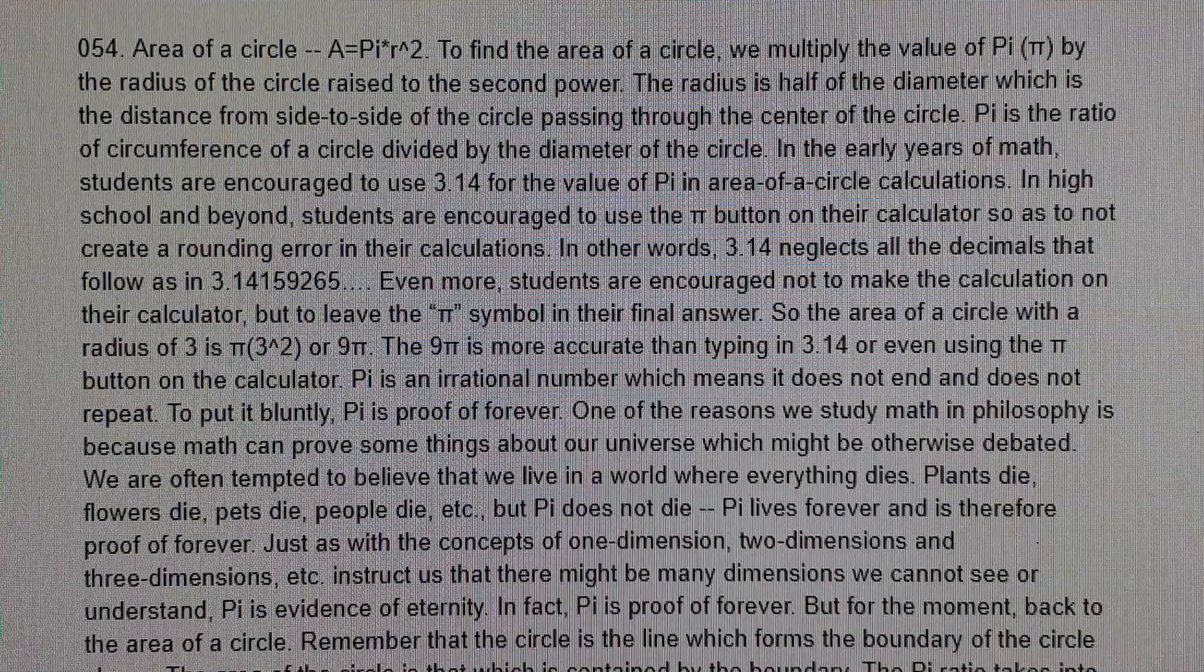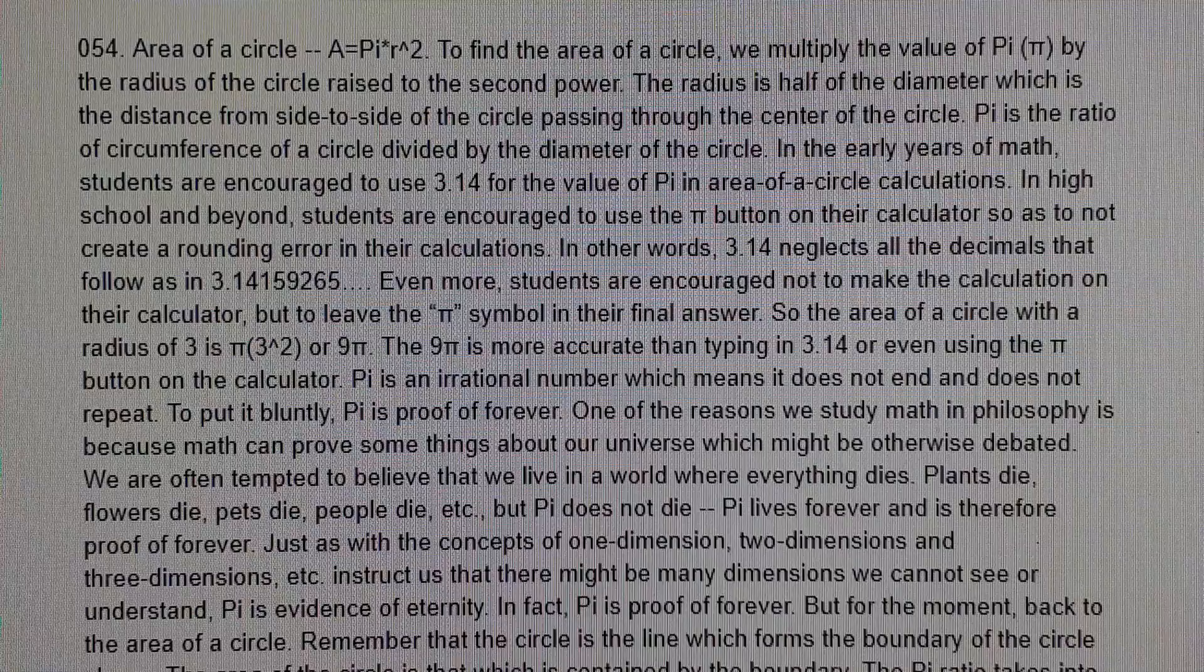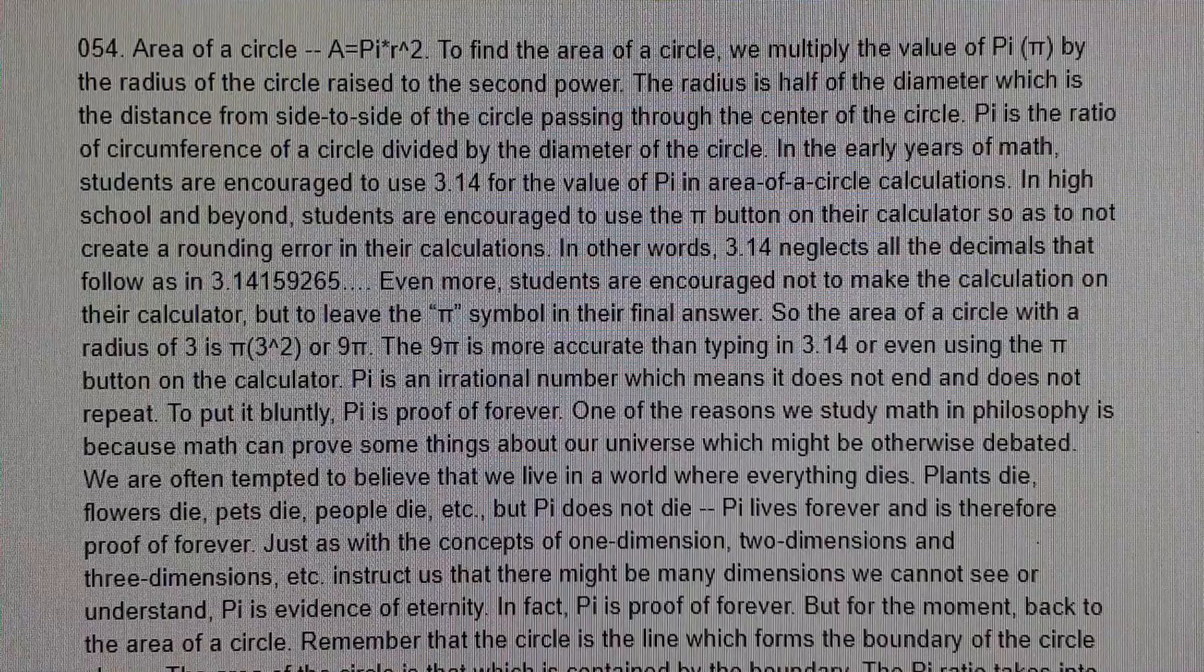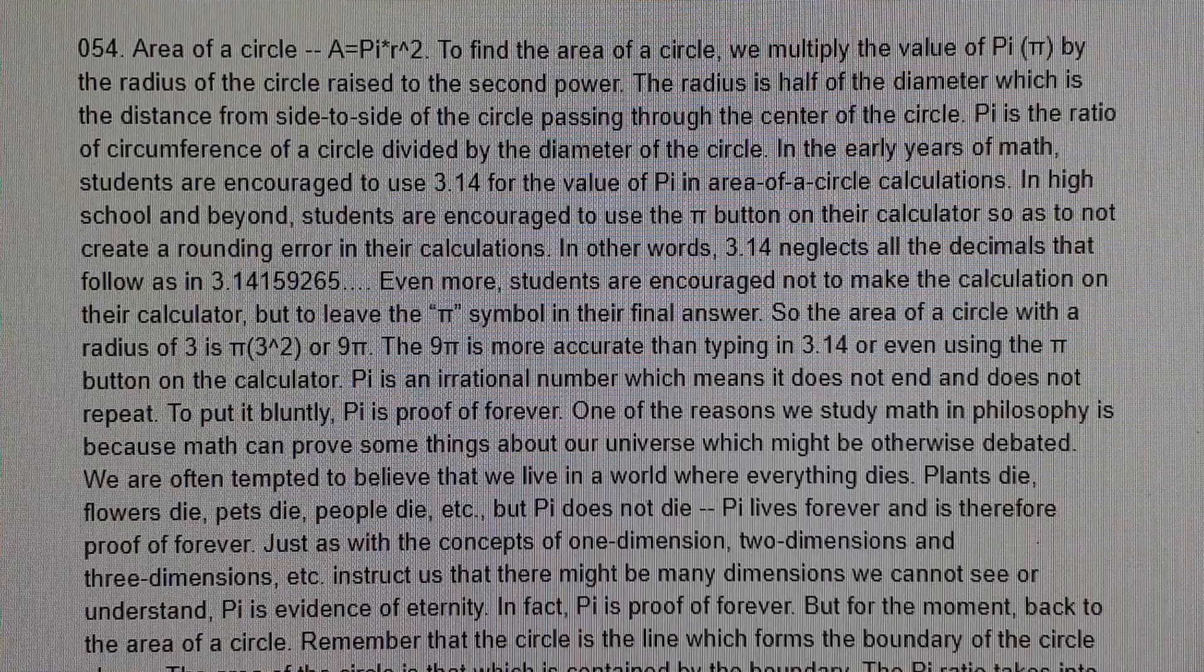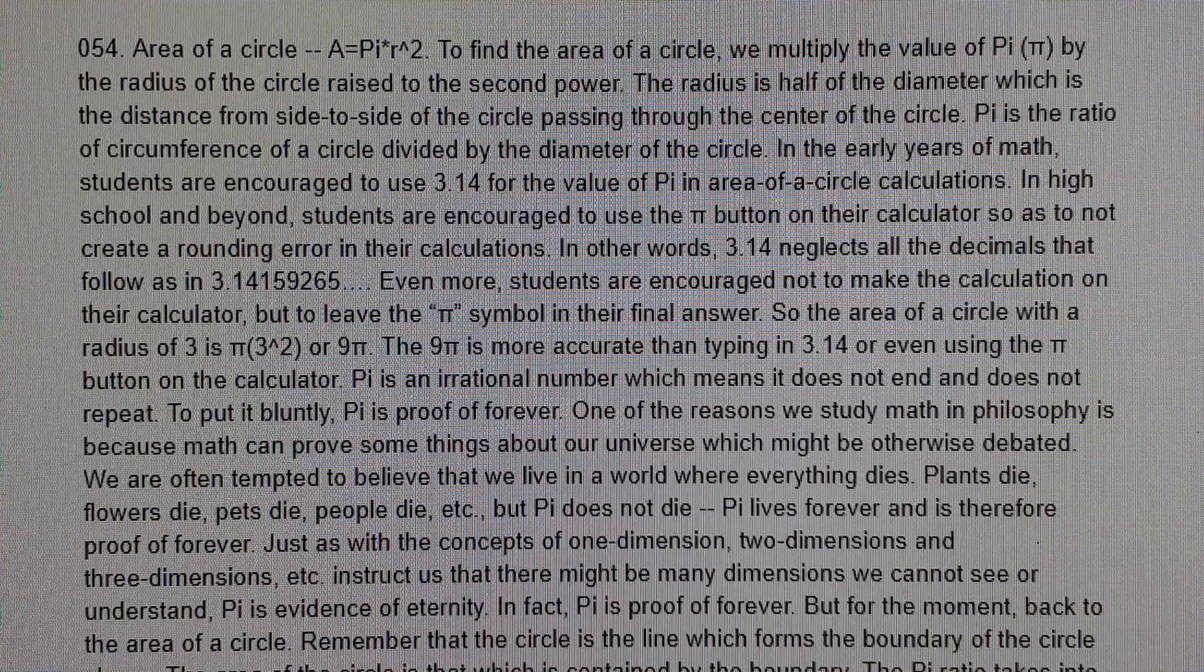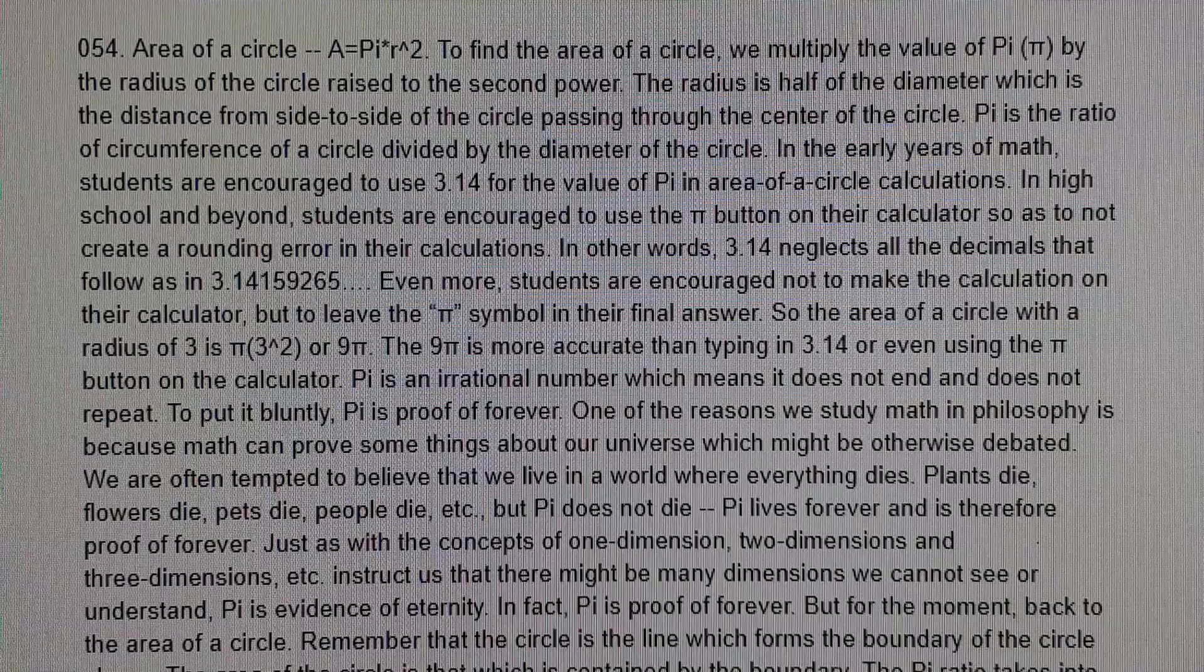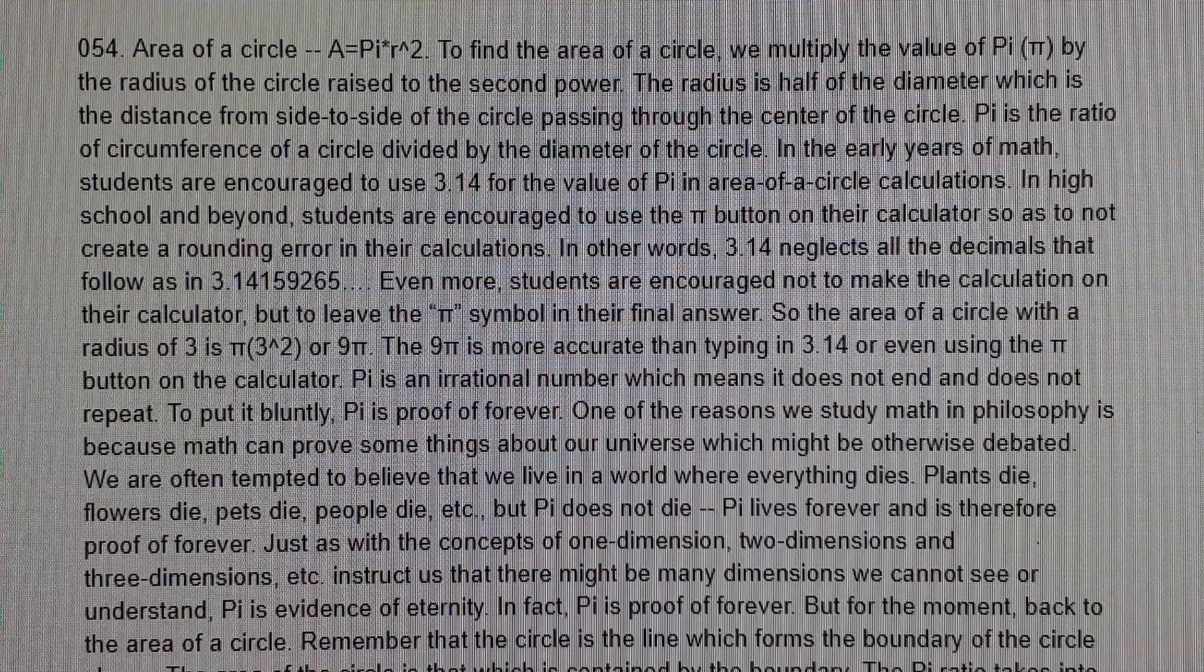In the early years of math, students are encouraged to use 3.14 for the value of pi in area of a circle calculations. In high school and beyond, students are encouraged to use the pi button on their calculator so as to not create a rounding error in their calculations. In other words, 3.14 neglects all the decimals that follow as in 3.14159265... Even more, students are encouraged not to make the calculation on their calculator but to leave the pi symbol in their final answer.